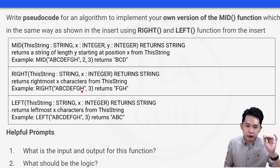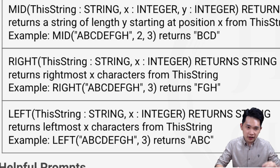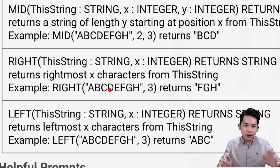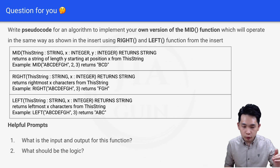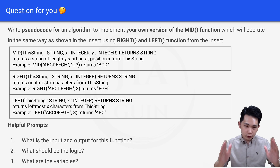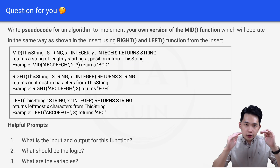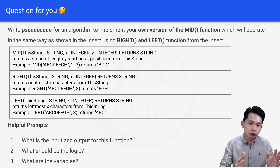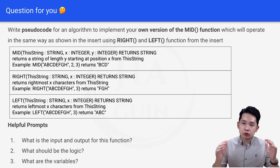Second, what should be the logic? To implement MID, you can first read from the right, then read from the left. For example, to get "def", first use RIGHT to get the rightmost characters up to and including "def", then apply LEFT to take 3 characters from the left of that result, giving d, e, f. Third, what variables do you need? You'll likely need the length of the input string and a variable for the output string, since you'll need to manipulate it before returning the correct result. Try your best and share your answer in the comments below!